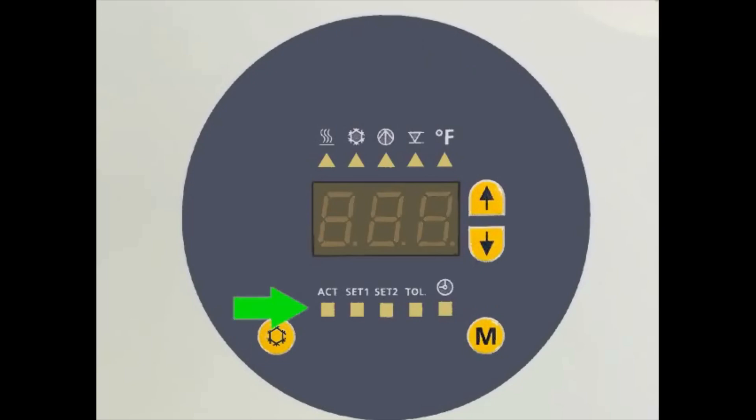The lower row are LED status indicators. You can cycle through these by pressing the mode key. On the lower left we have the actual menu. This will show the actual tank temperature.